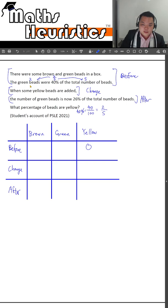There were no yellow beads at first. There were 2 units of green beads, and 5 minus 2, 3 units of brown beads over here. So what's going to happen next?